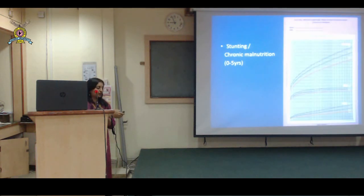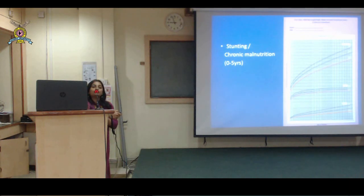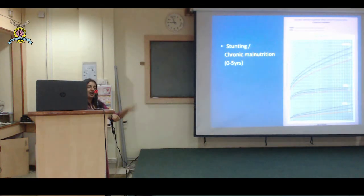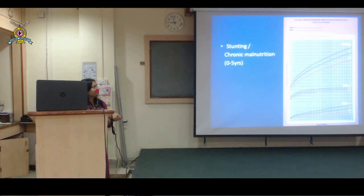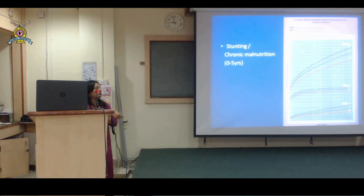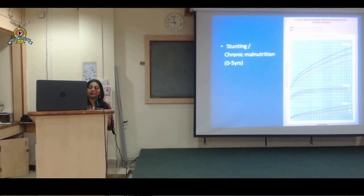Now, wasting versus stunting: wasting means acute malnutrition where height may not be affected. Stunting means height is also affected. Wasting is only weight affected; stunting means both weight and height are affected. For stunting, use the WHO height-for-age charts. Anything below the red line is severe stunting; between the yellow and red line is stunting. The etiology is chronic malnutrition. When weight as well as height are both affected - especially height - this means chronic malnutrition. In acute malnutrition, height is relatively preserved; it is the weight which is affected.